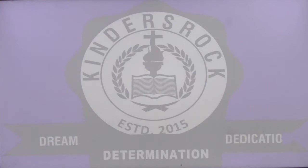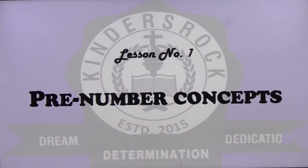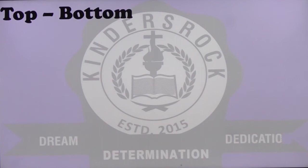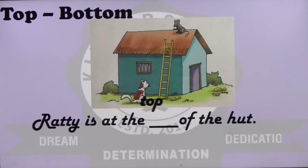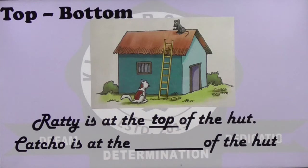Hello children, today we are going to study the subject maths. Lesson number one in maths is pre-number concepts. Let us look at some concepts. Top and bottom: there you see the picture of a hut. There is a rat sitting on the top of the hut and there is a cat sitting at the bottom. The rat's name is Ratty. Ratty is at the top of the hut and Catcho is at the bottom of the hut.